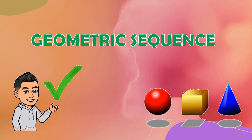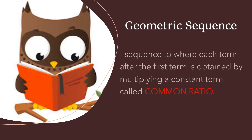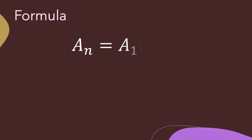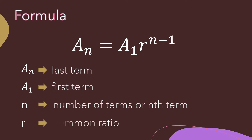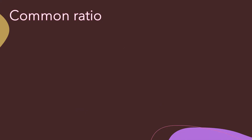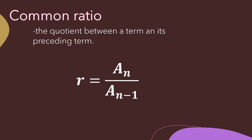A geometric sequence is a sequence where each term after the first term is obtained by multiplying a constant term called the common ratio. When dealing with problems involving geometric sequences, we use the formula a sub n equals a sub 1 times r raised to n minus 1. The common ratio r is the quotient between a term and its preceding term, given by the formula r equals a sub n over a sub n minus 1.